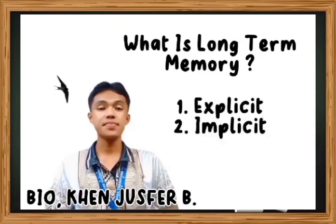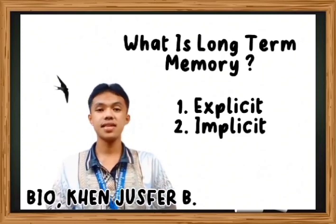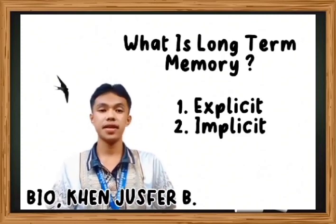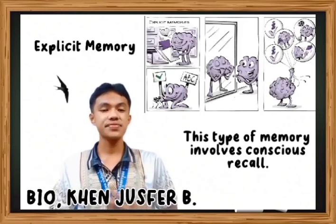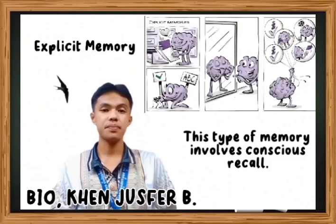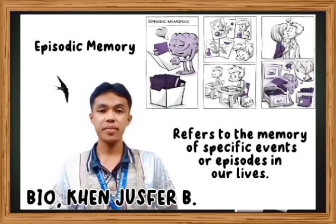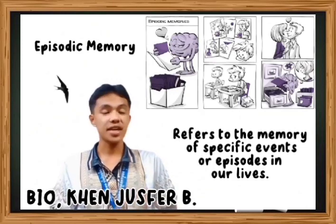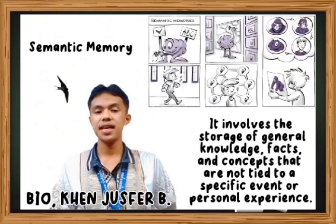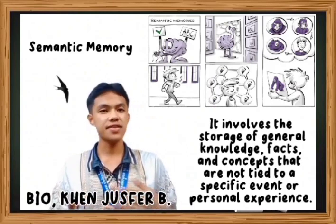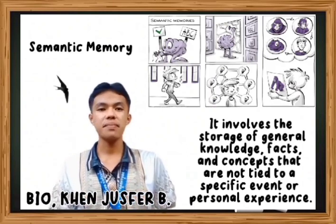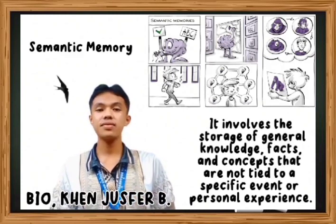There are two main types of long-term memory. The first is explicit memory, also known as declarative memory. This type involves conscious recall and is divided into two subtypes: episodic memory, which refers to memories of specific events such as a birthday party or vacation, and semantic memory, which involves storage of general knowledge, facts, and concepts such as knowing the capital of a country or understanding the meaning of words.